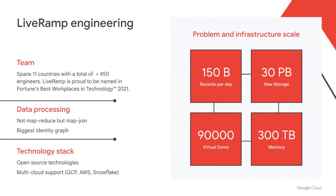Can you tell us more about your team and the data and technology landscape at LiveRamp? We are a global group of engineers that work on large and complex infrastructure to process petabytes of data on a daily basis. We have one of the biggest identity graphs in the industry. Unlike typical analytics problems which are mostly map and reduce, our problem is map and join — and we do it at a large scale. We have built some custom tooling and libraries for that. We mostly use open source technologies and most of our products have multicloud support.